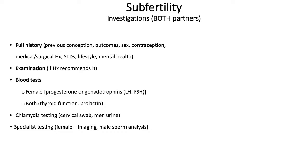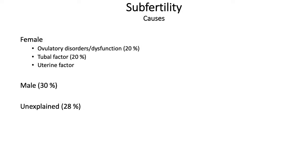Specialist tests would be done in secondary care — for females this would involve imaging, and for males sperm analysis. Looking at causes: for females there are ovulatory disorders, tubal factors, and uterine factors. Male causes make up another category, and finally unexplained causes, which make up about 28%.